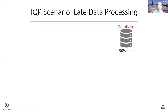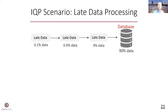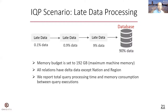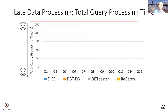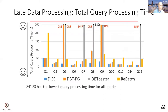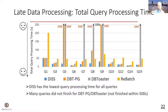We consider an IQP scenario of late data processing where 90% of data has already arrived, followed by three deltas of late data, so each query has four executions total. We set the memory budget to 192GB. We report the total query processing time of the four executions and the memory consumption between query executions. We find that IQP has the lowest processing time for all queries. If a query did not finish within 500 seconds, we mark it as DNF (did not finish).